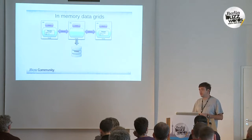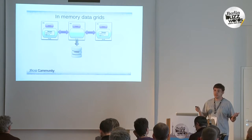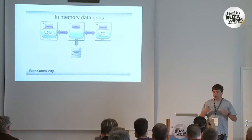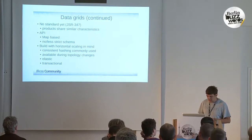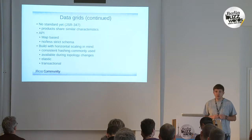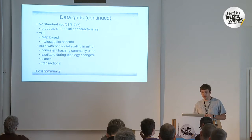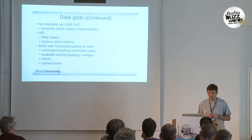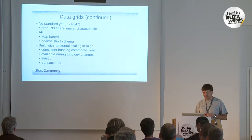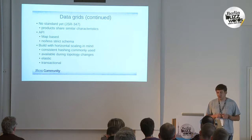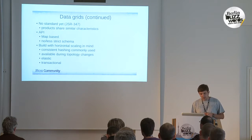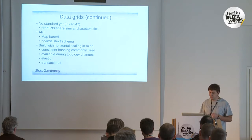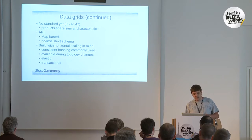This is needed, for example, when you want to turn down the whole system for an upgrade and you don't want to lose the data — you flush everything to a database or file system, then preload from there after the upgrade. At this moment there is no standard yet in the in-memory data grid space, but one is emerging: JSR 347. This is mainly the result of the fact that many such products share very similar characteristics. The API is generally map-based with no schema. In-memory data grids are built with horizontal scaling in mind — by adding more nodes to the cluster, capacity increases proportionally and performance is preserved.